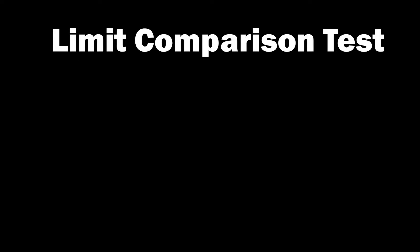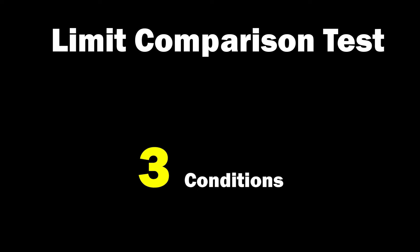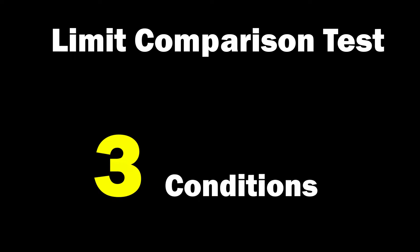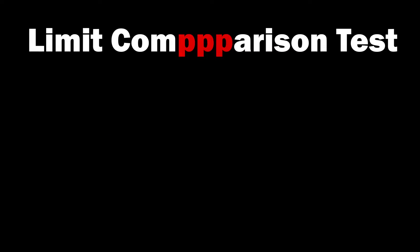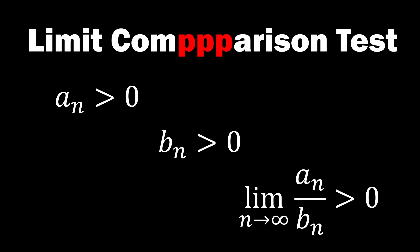Like the other tests we've learned, there are conditions for using the limit comparison test. To remember these conditions easily, let's insert three red P's in between. Here, P signifies positive, and it means that a sub n must be positive, b sub n must also be positive, and finally, the limit of a sub n over b sub n must also be positive. Let's remember these three positive conditions well, and we'll delve into what the limit comparison test is all about.